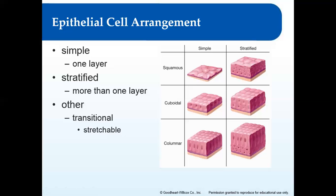Stratified squamous epithelium is found where chemical and mechanical protection are most needed — like skin. Body wash or shampoo has lots of chemicals, but they're not automatically absorbed into your bloodstream because stratified squamous epithelial tissue is really strong. It also protects from mechanical damage; if you brush against a doorway, your skin doesn't just slough off and expose muscle underneath. That's because stratified squamous tissue is very strong and held together well.